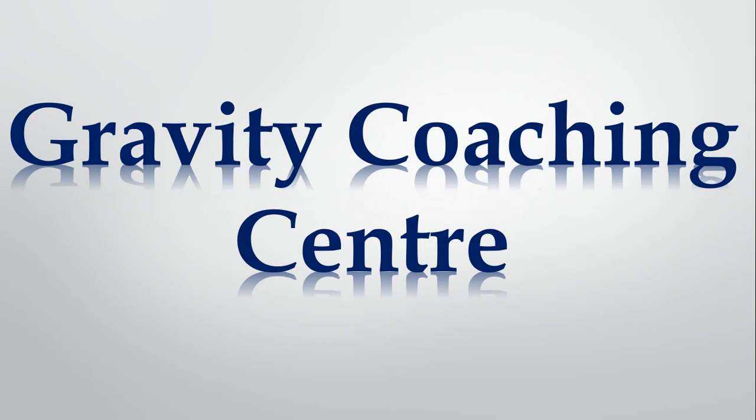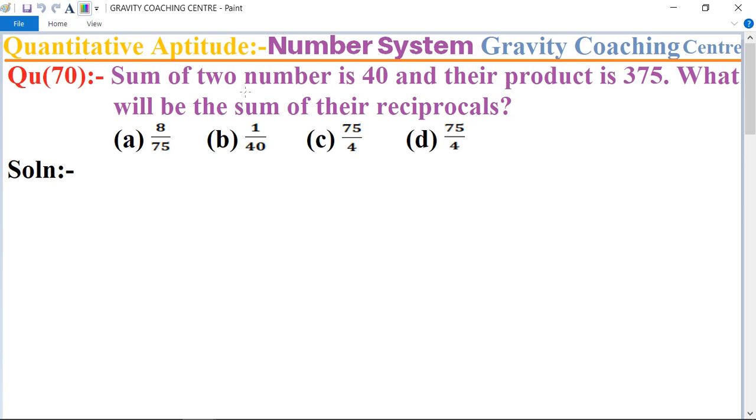Welcome to our channel Gravity Coaching Center, quantitative aptitude chapter number system, question number 70. Sum of two numbers is 40 and their product is 375, so what will be the sum of their reciprocals?